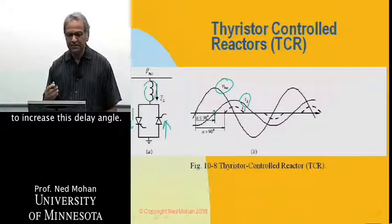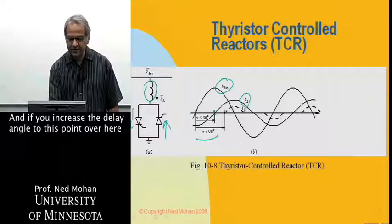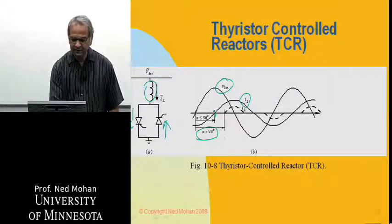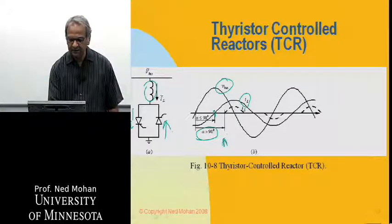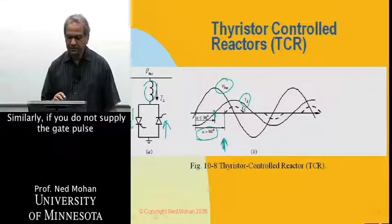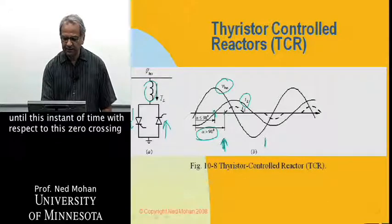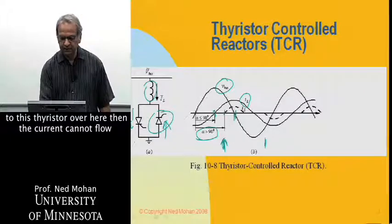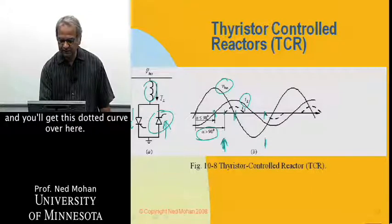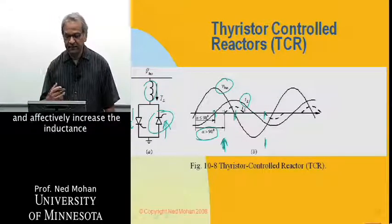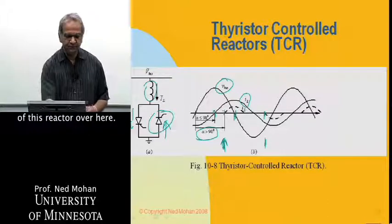With thyristors, we have the capability to increase the delay angle. If we increase the delay angle beyond a certain point and do not apply a gate pulse to a given thyristor until a later time, the current cannot begin to flow until that time. The resulting current waveform is shown by the dotted curve. By increasing this delay angle, we can make the current smaller and effectively increase the inductance of this reactor, giving us control over the reactive power — and in this case, the current is lagging behind the voltage.